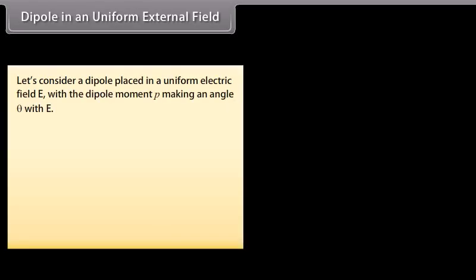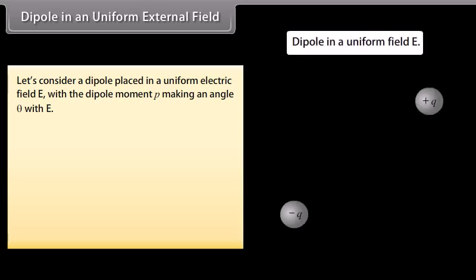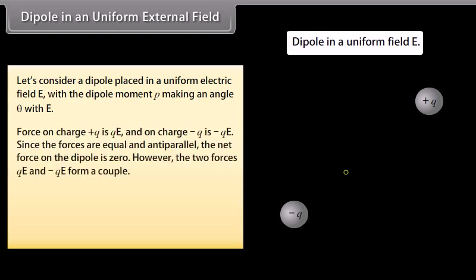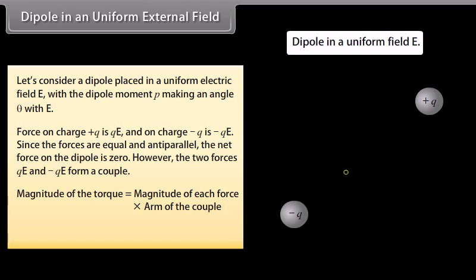Dipole in a uniform external field: Consider a dipole placed in a uniform electric field E with the dipole moment p making an angle θ with E. The force on charge +q is qE and on charge −q is −qE. Since the forces are equal and anti-parallel, the net force on the dipole is zero. However, the two forces form a couple, and the magnitude of the torque equals the magnitude of each force times the arm of the couple, giving τ = p × E.